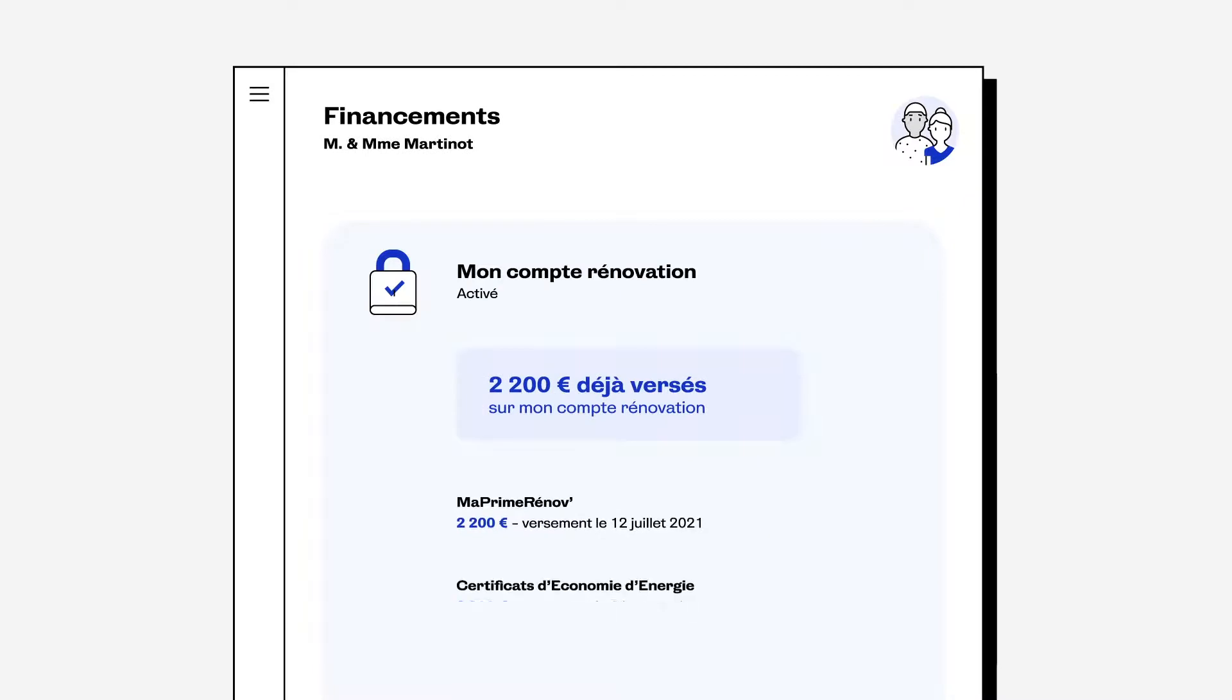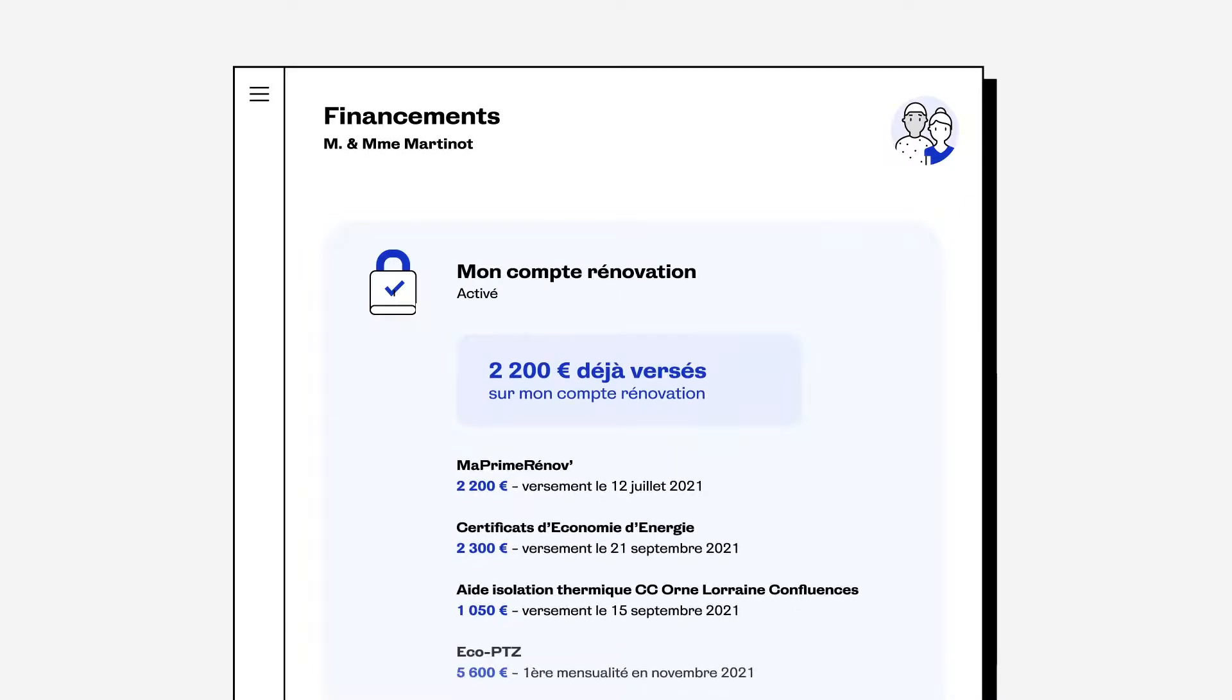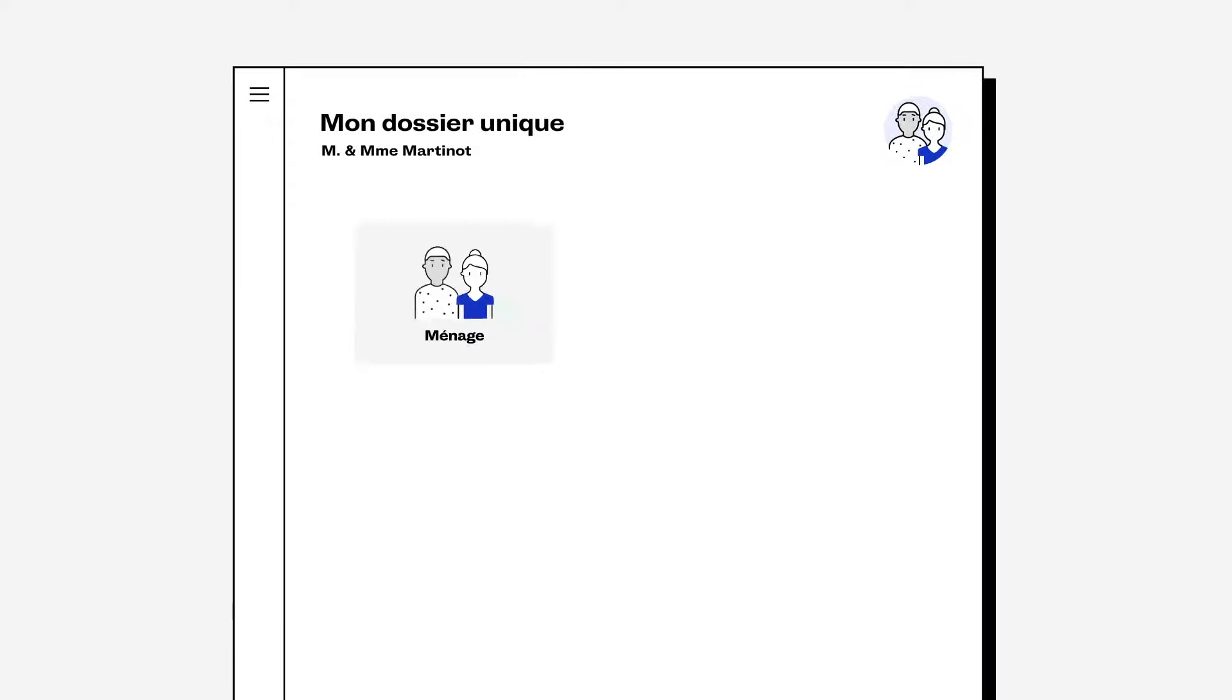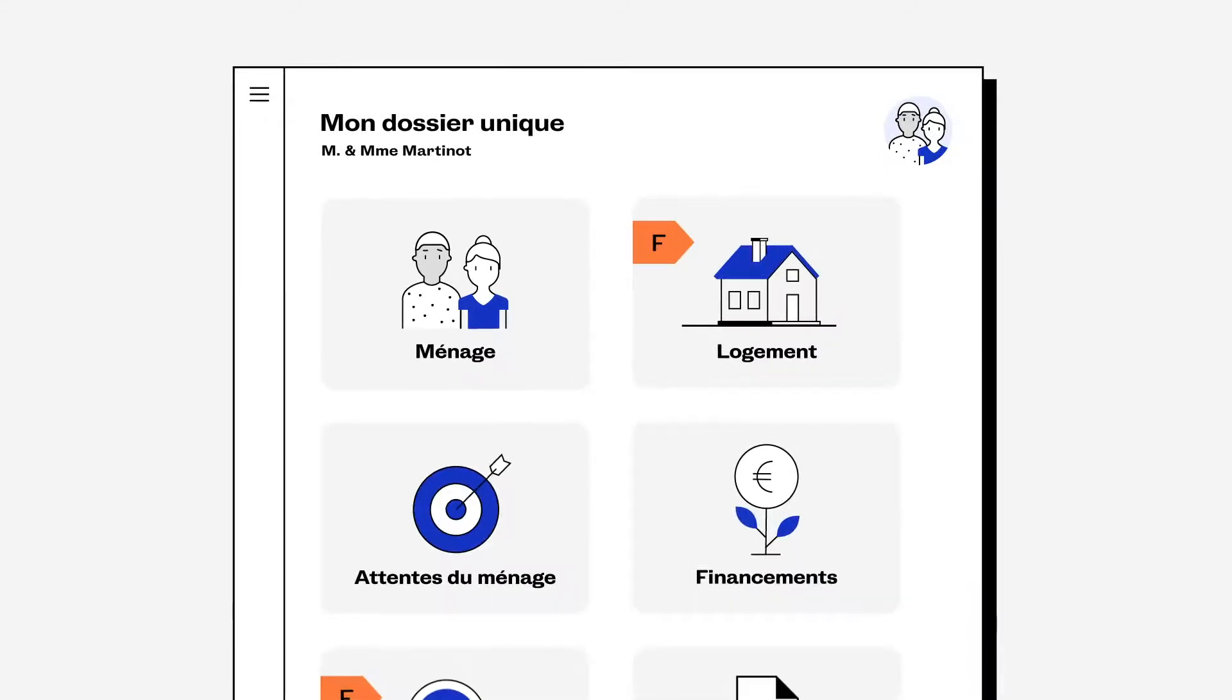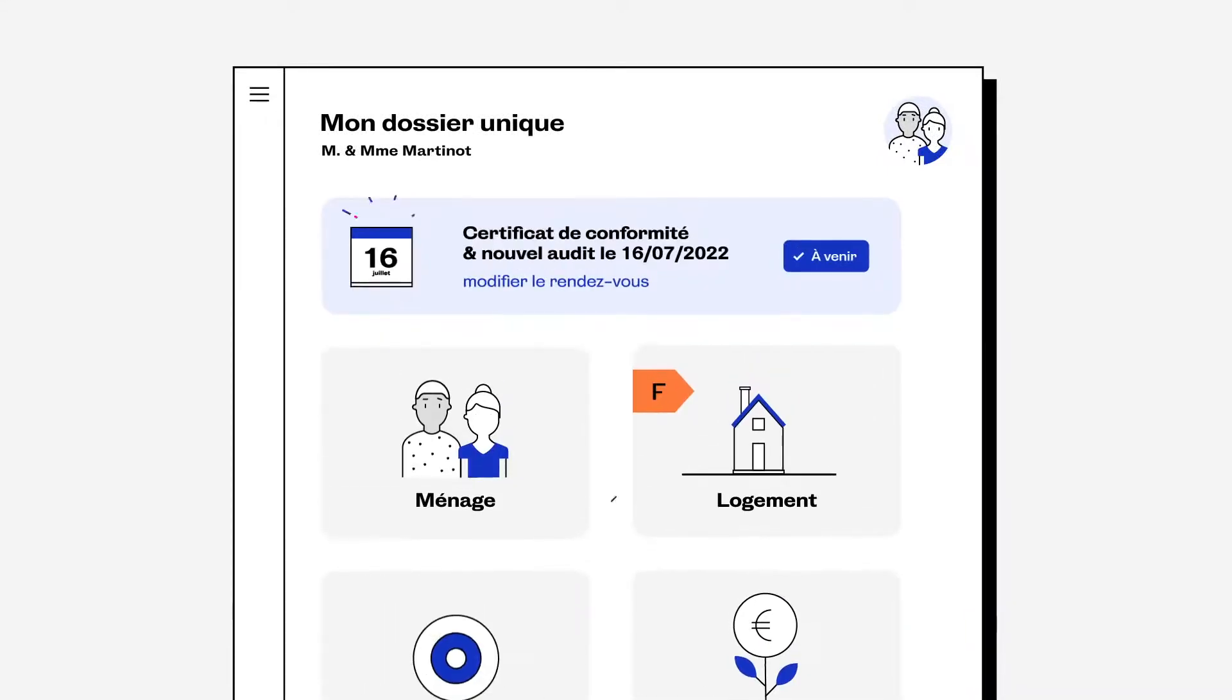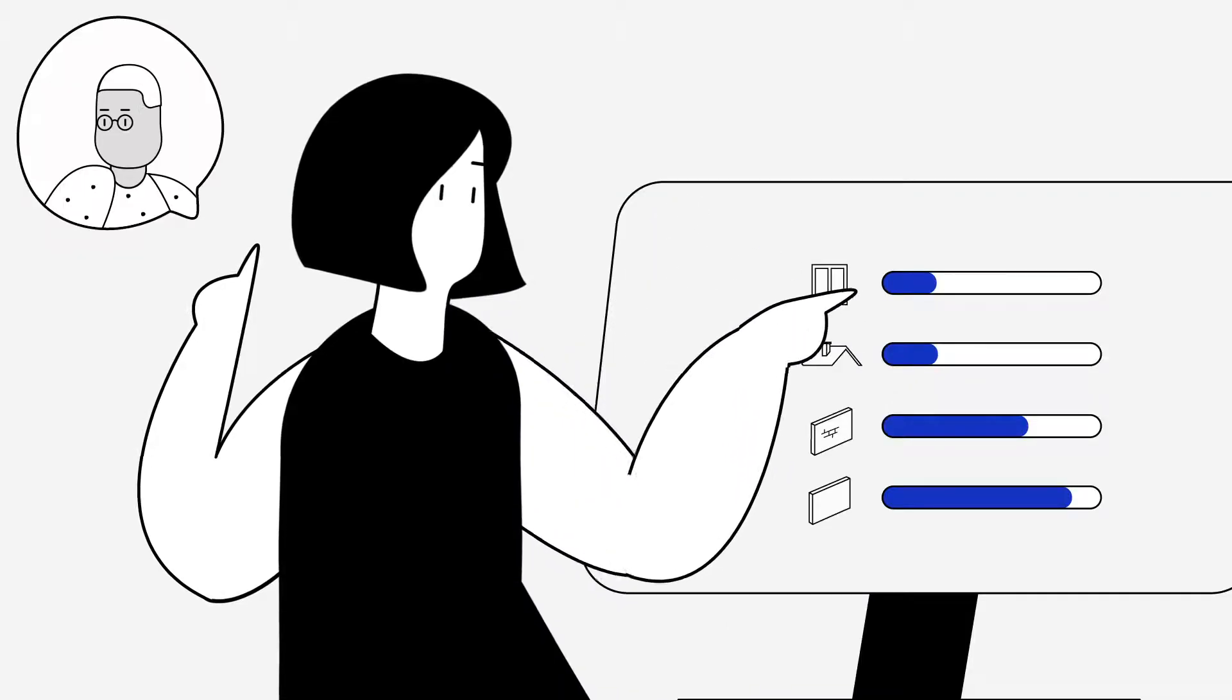In parallel, he can see the aids arriving in his file. The end of work is often a critical moment. There again, Louis is well accompanied. He is invited to perform a new audit to validate the certificate of conformity. And Julie takes care of everything.